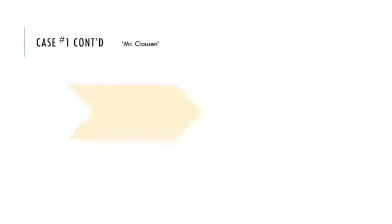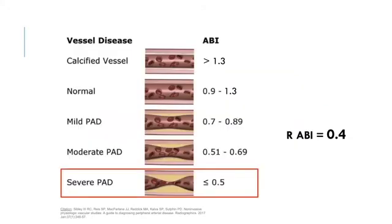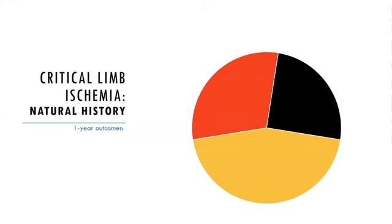Mr. Clausen is seen in follow-up a year later. Unfortunately, he hasn't quit smoking and his claudication distance has significantly decreased. He also notes discomfort and numbness in the affected foot when lying in bed, somewhat relieved by dangling his feet off the edge of the bed. His ABI today is 0.4, confirming severe ischemia consistent with rest pain. Within one year of critical limb ischemia, 30% will undergo amputation, 25% will die from cardiovascular causes, and less than half will be alive with both limbs.